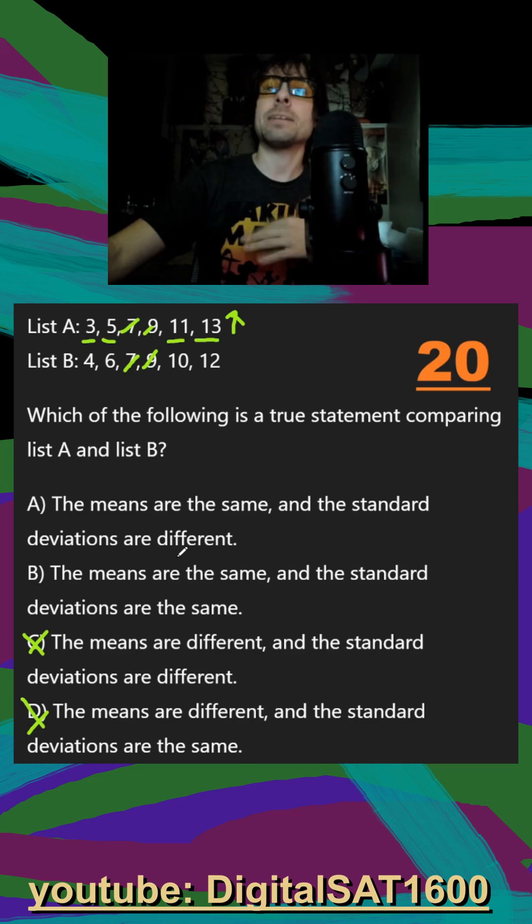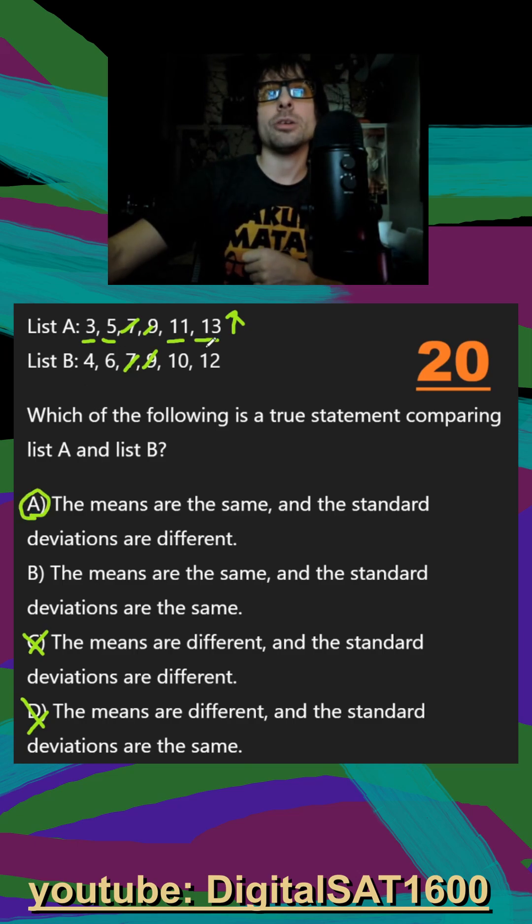So even though it's getting more advanced for saying which one's higher or lower, they are just asking that the standard deviations are the same or not. We know they're different, but if it did ask we would actually know that list A has a higher standard deviation.